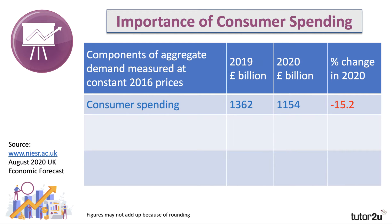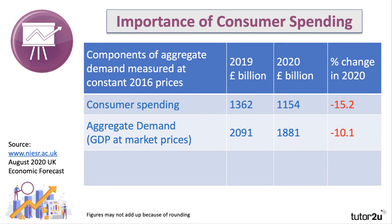Consumer spending is important because it's a big share of aggregate demand. Look at the figures here for AD or GDP by expenditure at market prices, given by the formula C plus I plus G plus X minus M. You can see it is a big percentage of aggregate demand. GDP is expected to fall by 10% in 2020 — a really deep recession.